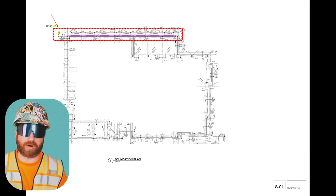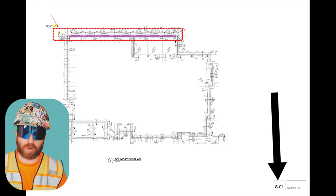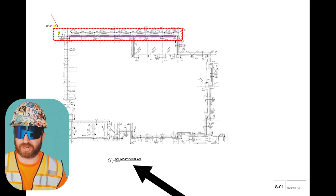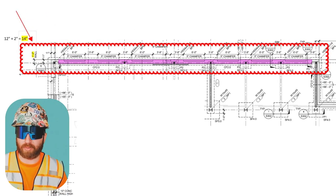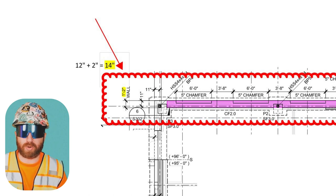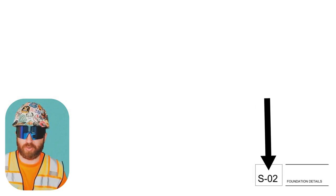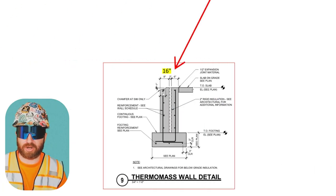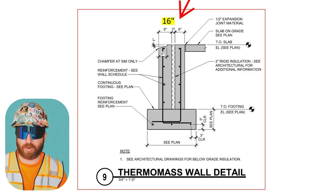Let's jump into a set of drawings. We're on sheet S-01, which is a foundation plan, and we're going to look at detail one — the overall foundation plan. I've already got the drawing marked up with bubbles, highlights, and an arrow pointing right to the area in question, which helps draw the design team's attention and expedite the answer. When we zoom in, you can see the foundation wall has a thickness of one foot two inches — that's 12 inches plus two inches, a total of 14 inches. Now on the next page, S-02, which is the foundation details page, we see a section cut of that same wall. Looking at detail nine and zooming in, the thickness shown is 16 inches — so there's a conflict between these two drawings.